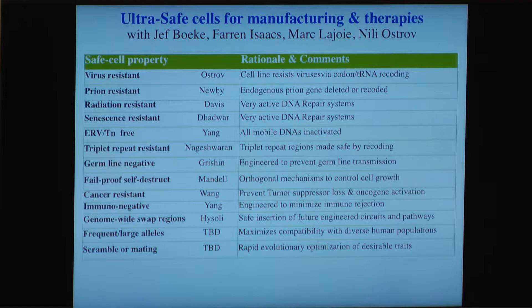This particular pilot project is on so-called ultra-safe cells for manufacturing and therapies. These could be any mammalian cells, since those are used for making protein pharmaceuticals and vaccines. Probably they'll be human so we can also use them for stem cell therapies and transplants. We want them to be virus resistant, prion resistant, radiation resistant, and senescence resistant.